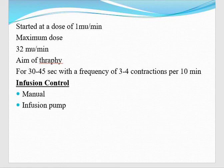The infusion of oxytocin — we can monitor it manually. We can increase the drops every 15 to 30 minutes by 10 drops, or by infusion pump. We will set the drops according to 1 milli-international unit per minute, then we will increase every 30 minutes or 15 minutes according to the response of uterine contractions.